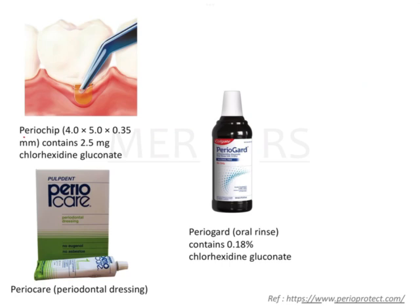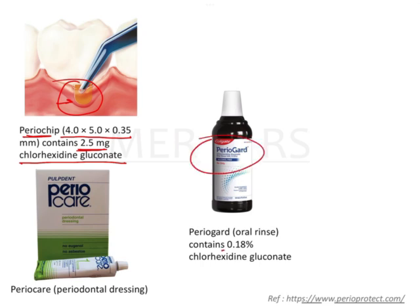A periochip is a biodegradable chip containing chlorhexidine gluconate at a concentration of 2.5 milligrams, with a size of 4 by 5 by 0.35 millimeters. Perio Guard mouthwash contains 0.12 to 0.18% chlorhexidine gluconate solution, which is an oral rinse. Periocare is a periodontal dressing.